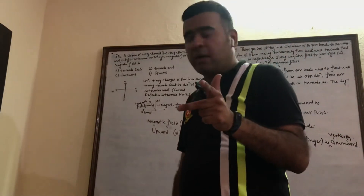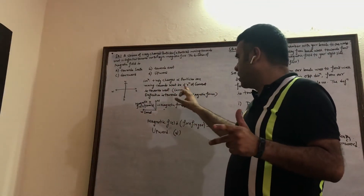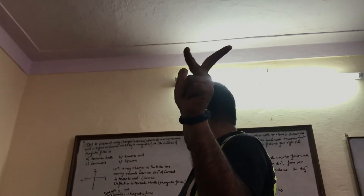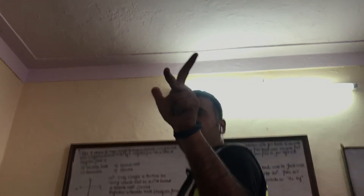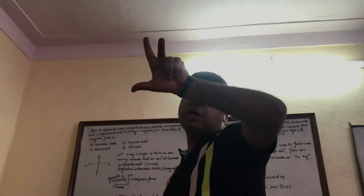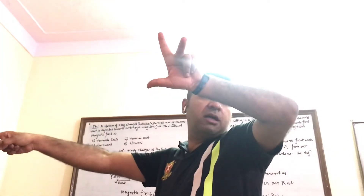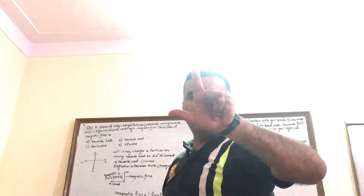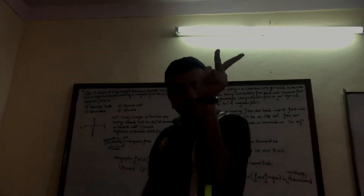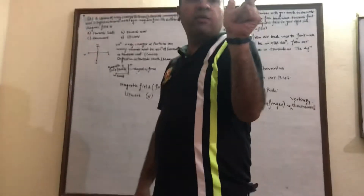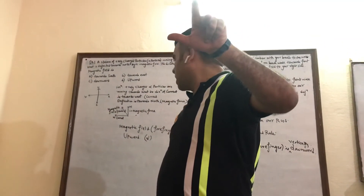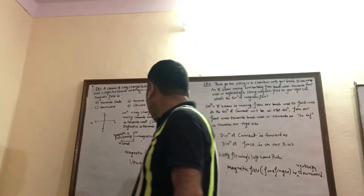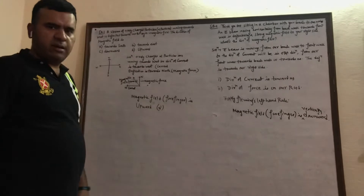Applying Fleming's left-hand rule: the center finger points towards the west (the direction of current), the thumb points towards the north (the direction of magnetic force), and the forefinger — which gives the direction of the magnetic field line — points upward. So the answer is option D: upward.